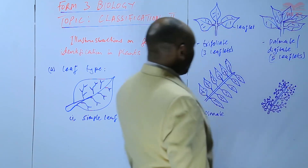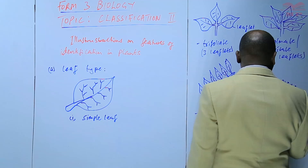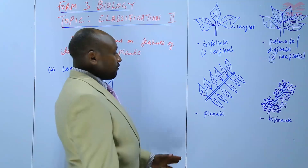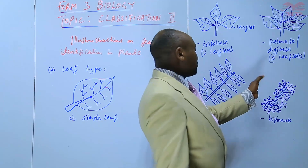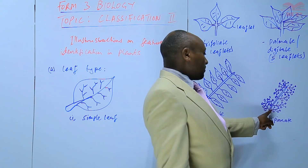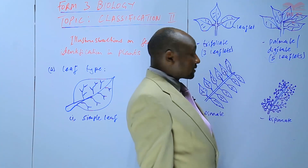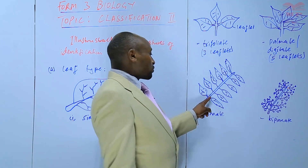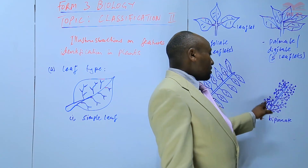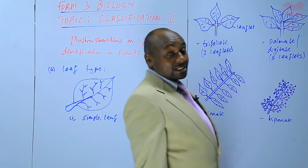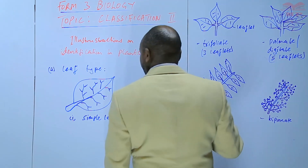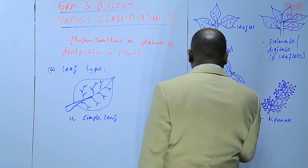We have another type: this is a compound bipinnate. The bipinnate is whereby from the main stalk we have another branching before we get to the leaflet, so we branch twice. Once from the main stalk, and once more before reaching the leaflet. With pinnate, from the main stalk we only branch once to get to the leaflet. Branching twice from the midrib to the leaflet — we call it bipinnate. So we have these types of compound leaves.